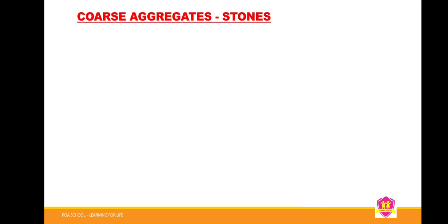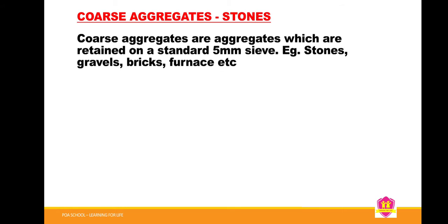We now come to today's business, which is coarse aggregate. When we talk of coarse aggregate, coarse aggregates are aggregates which are retained on a standard 5mm sieve. This means that fine aggregate can pass through a standard 5mm sieve, but the ones retained on the surface of the sieve are known as coarse aggregate.